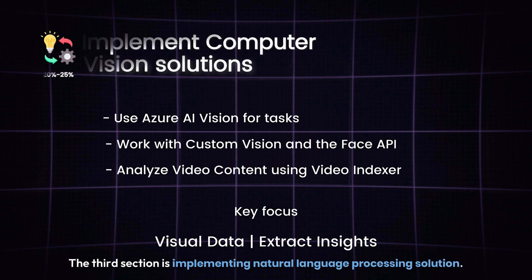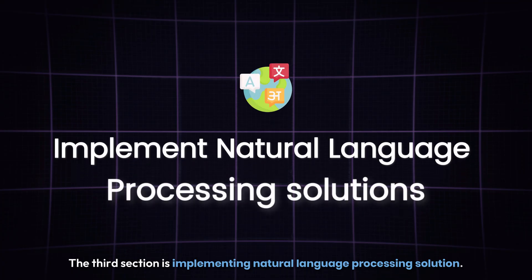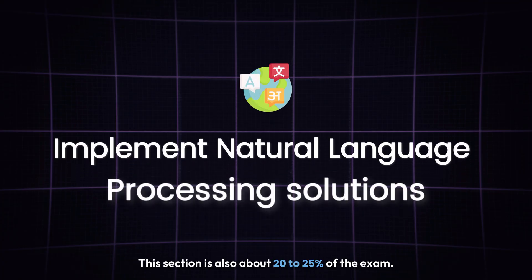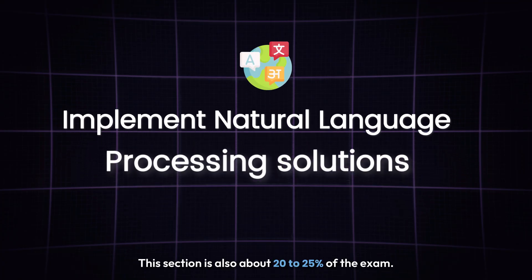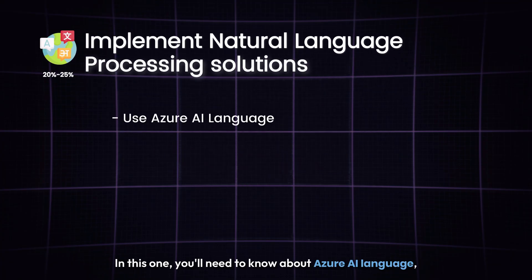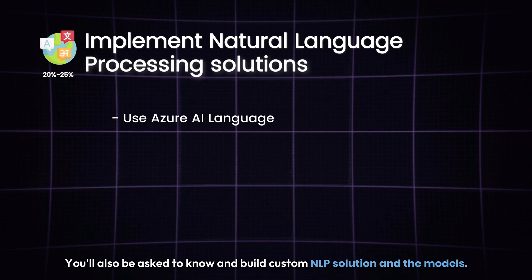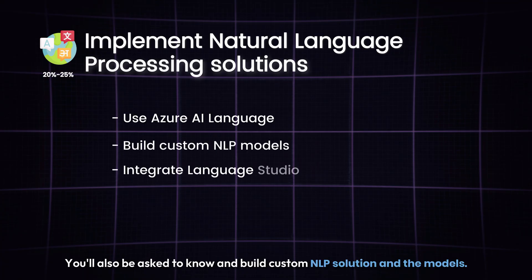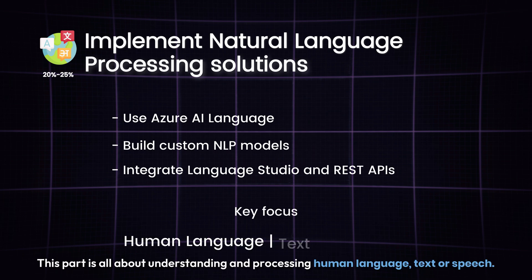The third section is Implementing Natural Language Processing Solutions. This section is also about 20 to 25% of the exam. You'll need to know about Azure AI Language services such as sentiment analysis, entity recognition, and translation. You'll also be asked to build custom NLP solutions and models. This part is all about understanding and processing human language, text, or speech.